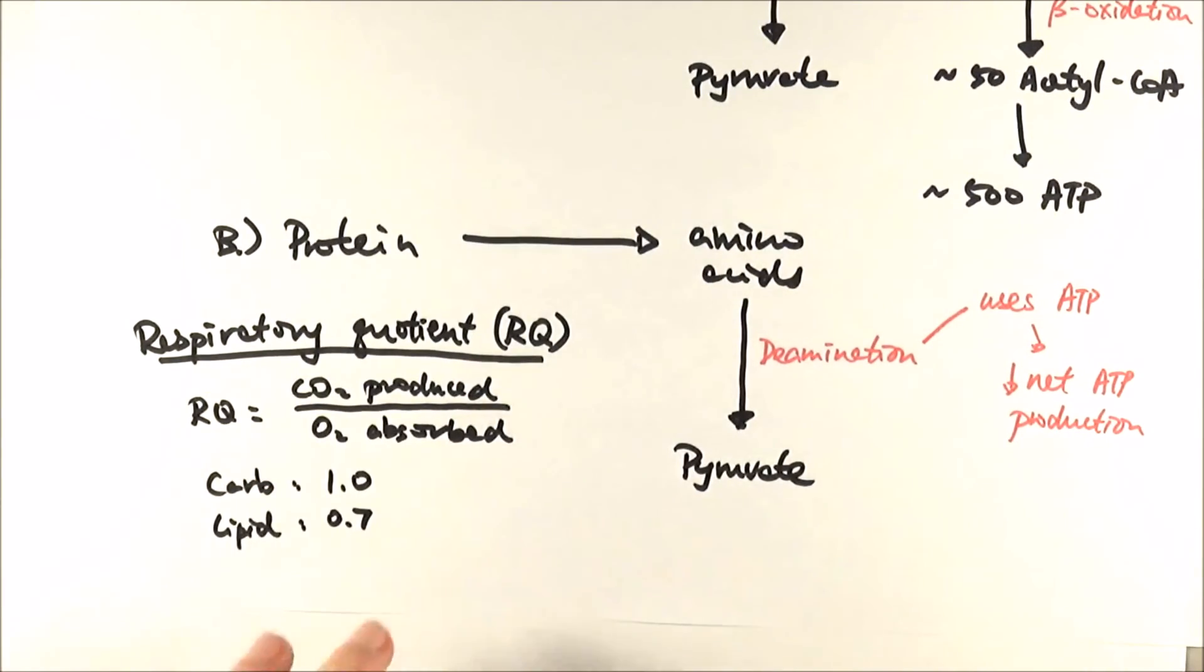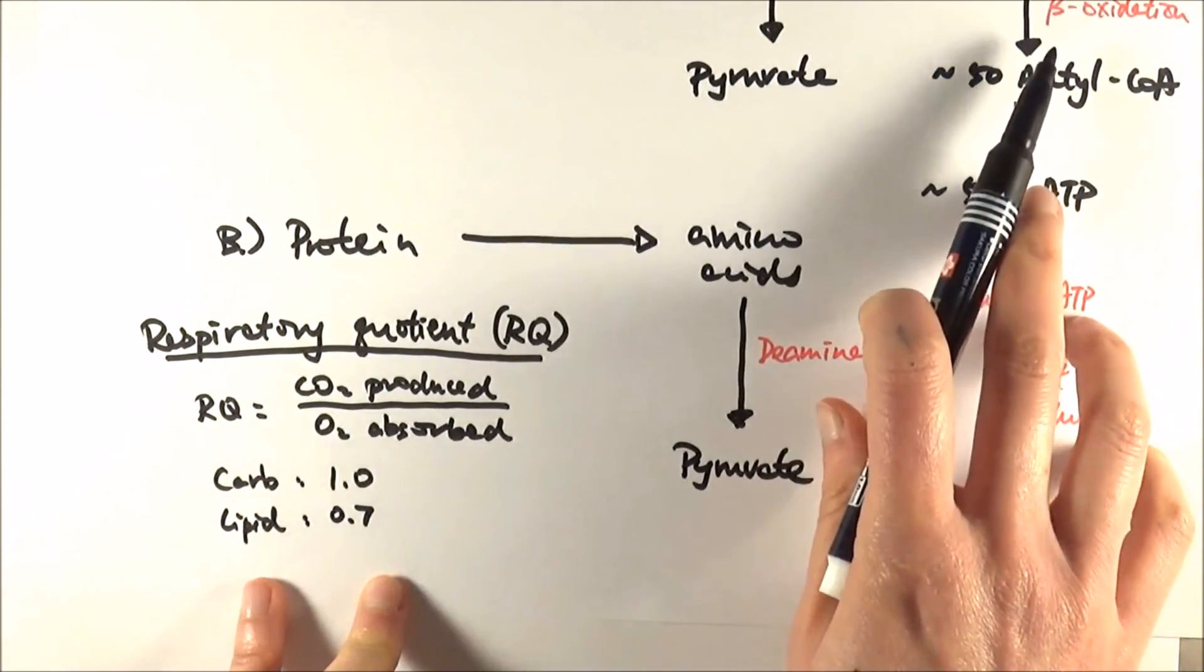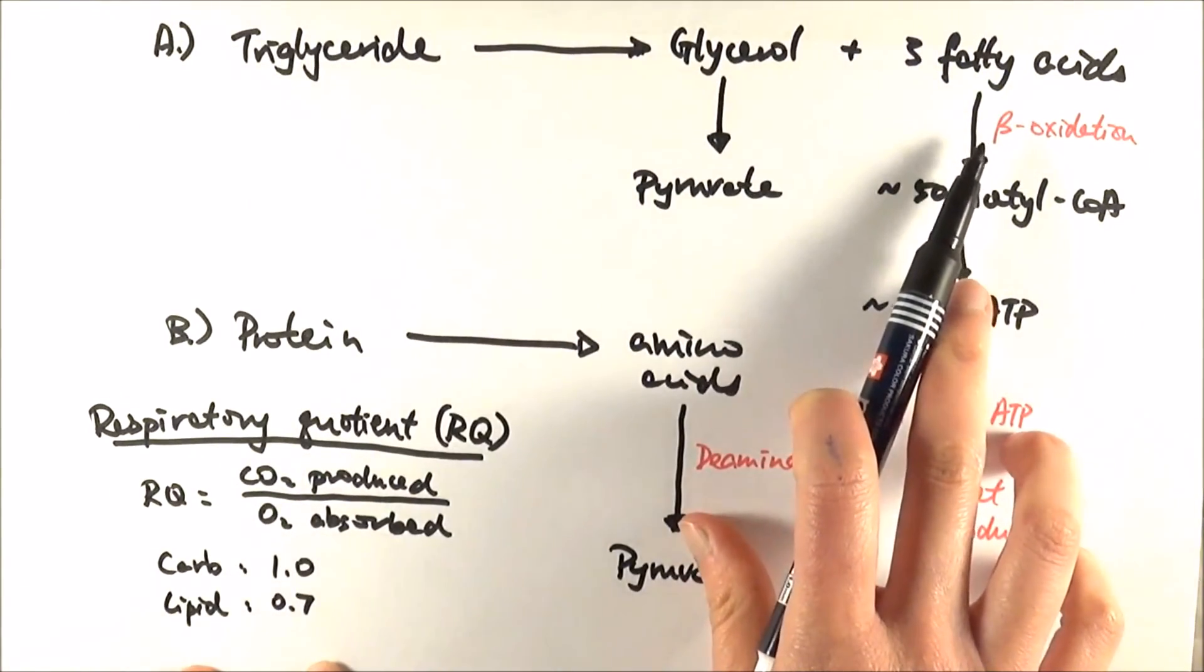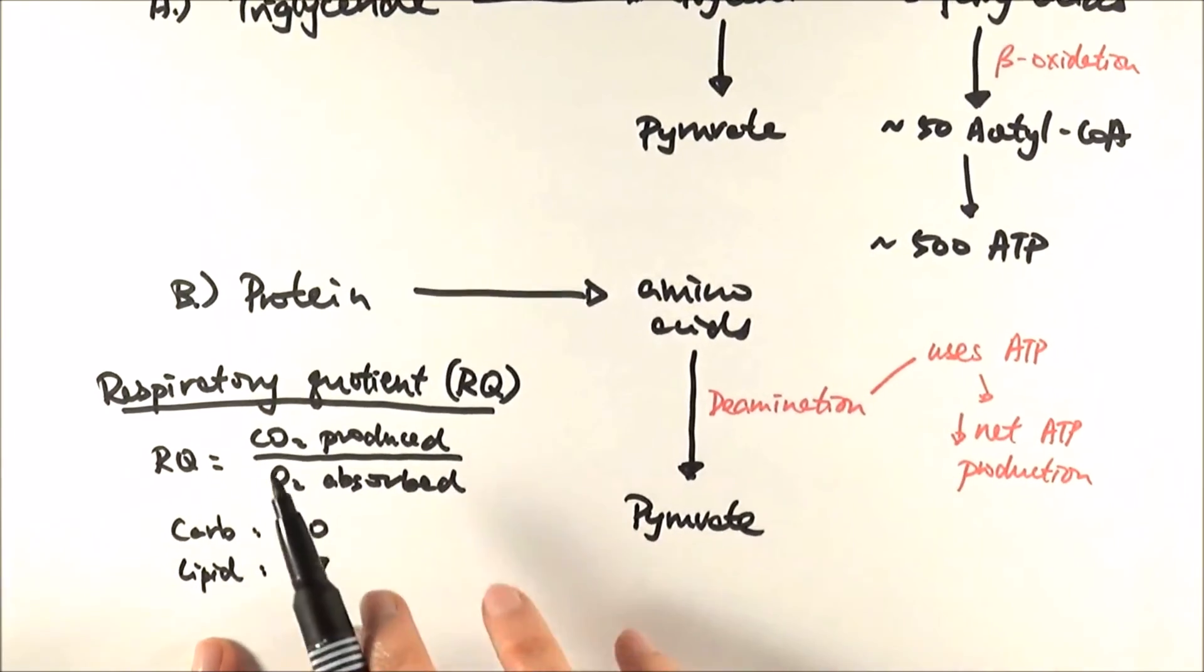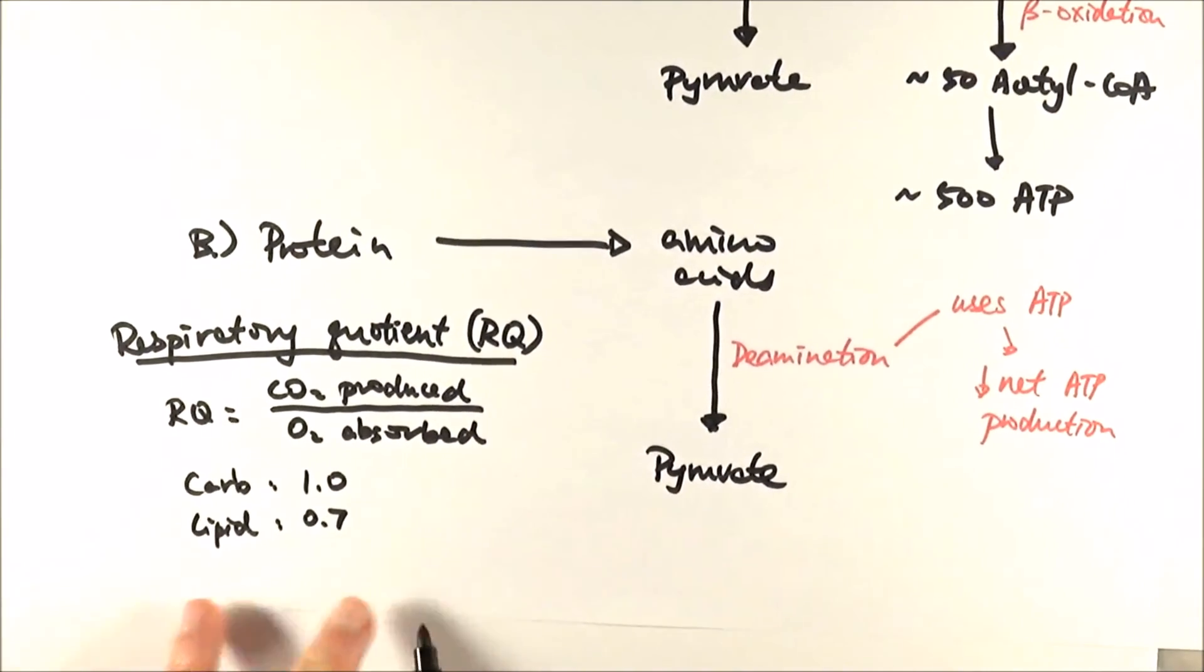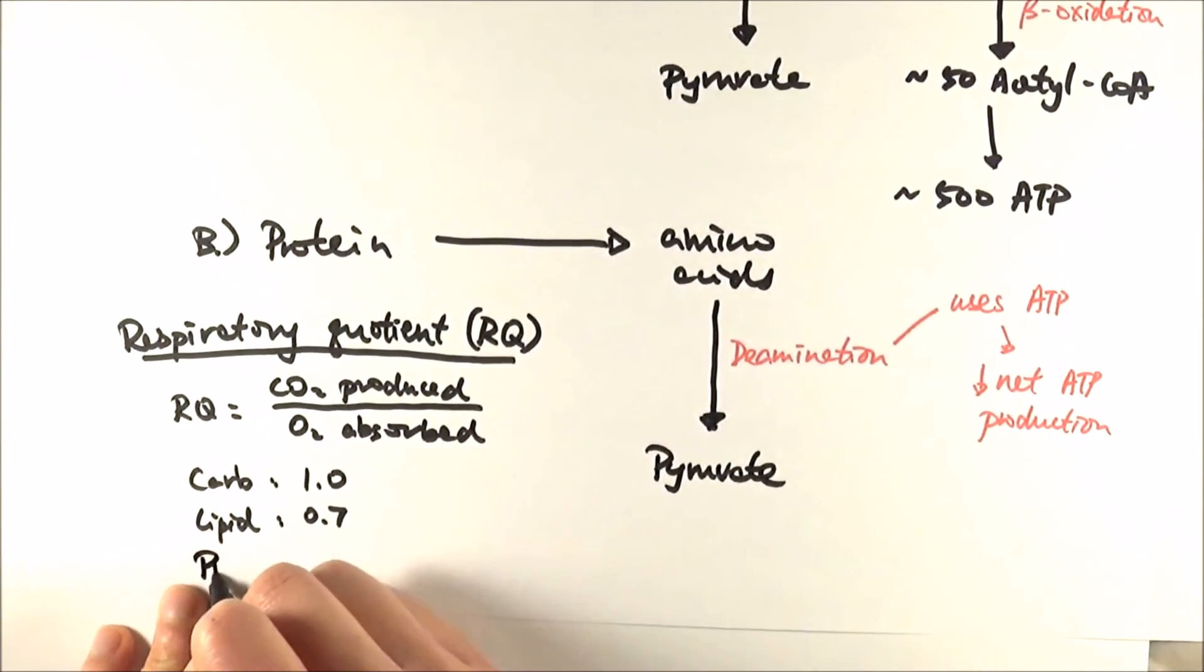For lipids it will be 0.7, because we use up lots of oxygen in beta-oxidation to break things down, so the denominator increases, meaning the overall number decreases—hence why it's 0.7. As for proteins, it will be 0.9.